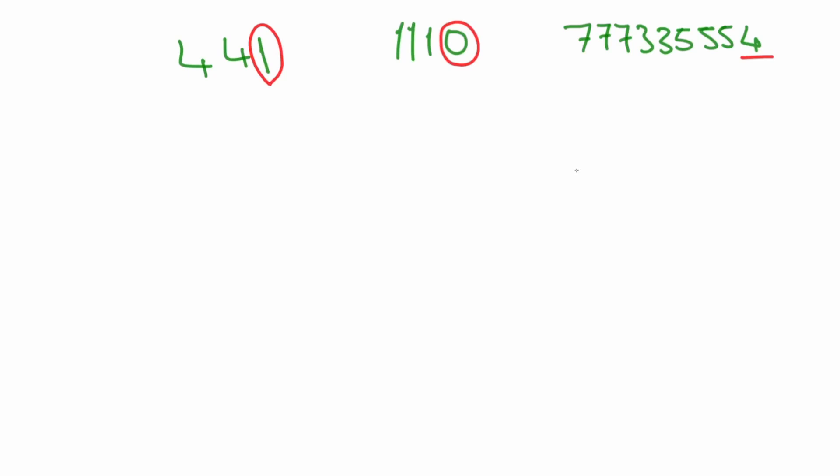Let's prove the rule of divisibility by 2. Let's say we have a number with n digits, and let's number the digits from right to left. So a1, a2, dot dot dot, an.